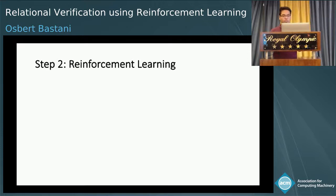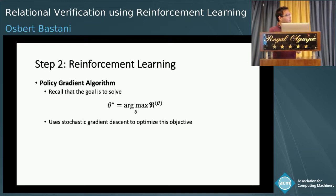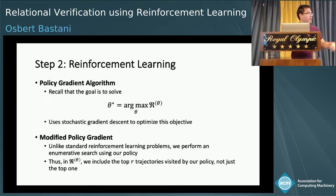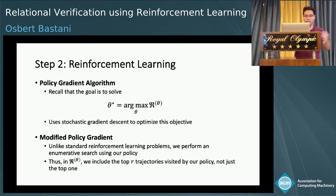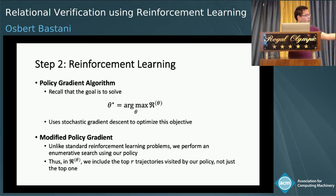Next, I'll say a little bit about the reinforcement learning algorithm we use. We're going to use the policy gradient algorithm, a standard reinforcement learning algorithm that optimizes cumulative reward using stochastic gradient descent. We're actually going to modify it slightly, because unlike standard RL, we're going to take the policy and perform an enumerative search according to this policy. Standard RL cares about only the top one attempt according to the policy, whereas we care about the top R attempts according to some search strategy. So in the reward, we aggregate the reward over the top R trajectories visited by our policy as part of the search algorithm, not just the first one it finds.